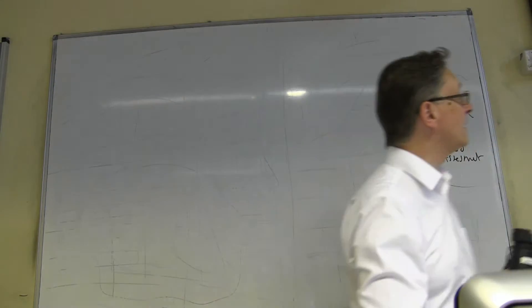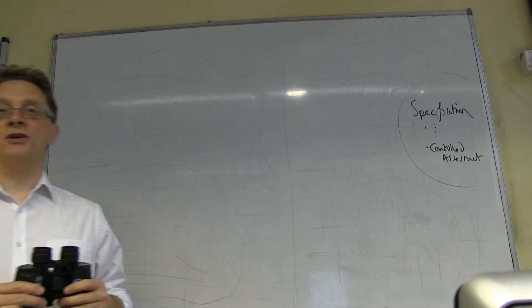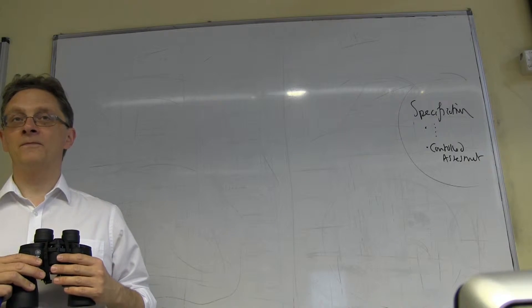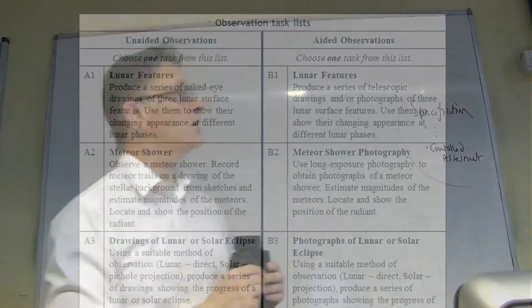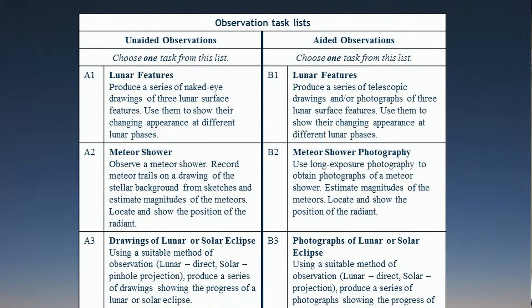Very importantly, you can't do the same project from the same row. You've got to do a list A project, you've got to do a list B, but you can't choose them from the same row. So if I decide to do project A1, naked eye drawings of lunar features, I can't also do B1. If you choose A1, you can pick anything from the B list except B1.